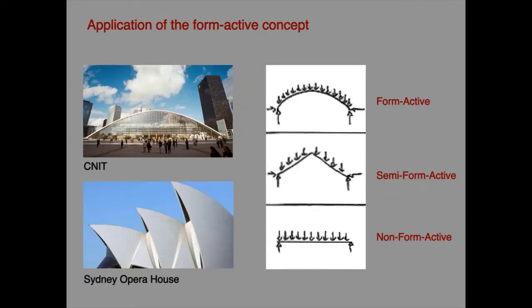Looking at buildings seen in earlier presentations in this series on structural archetypes: the CNIT shell has a form active shape because it is subjected to a distributed load caused mainly by its own weight, and is therefore very efficient. The Sydney Opera House is also subjected principally to a distributed load but does not adhere to the form active shape. Neither is it non-form active. It is therefore semi-form active with a geometry significantly different from the form active geometry, carrying large amounts of bending and, as shown in the introductory presentation, has a much lower efficiency — around 50 times less than the CNIT shell.